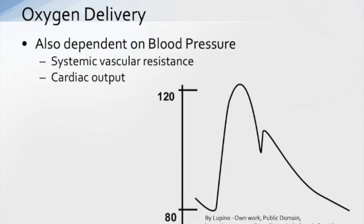Oxygen delivery is also dependent upon blood pressure. Blood pressure is made up of cardiac output, which drives the systolic pressure, and systemic vascular resistance, which drives the diastolic pressure. If blood pressure is not adequate, we won't have enough pressure to push blood through those small vessels out in the periphery.